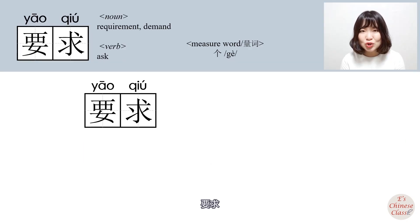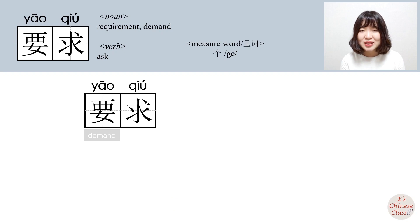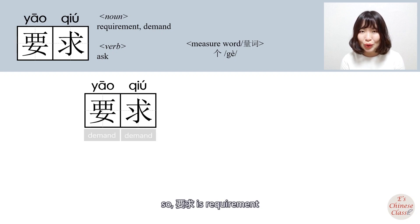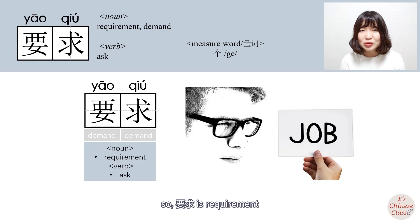要求: 要 means demand, 求 also means demand. Together, 要求 means requirement.